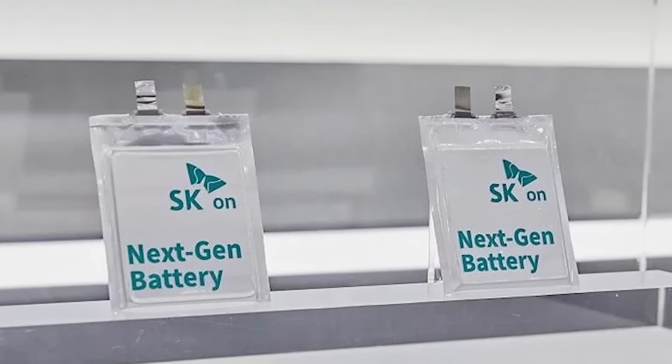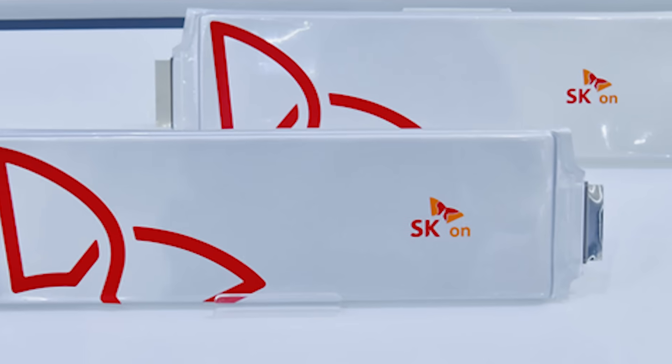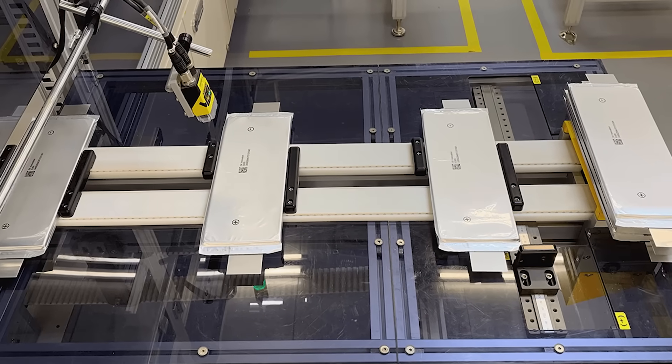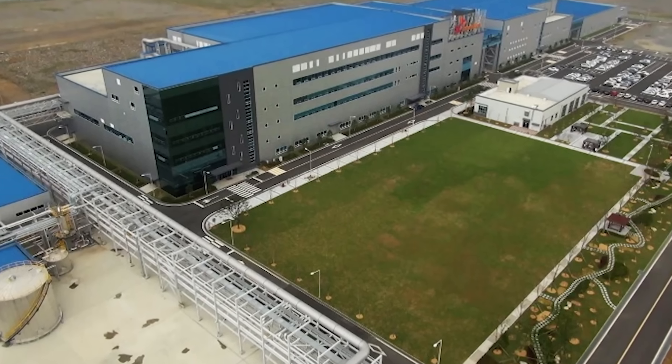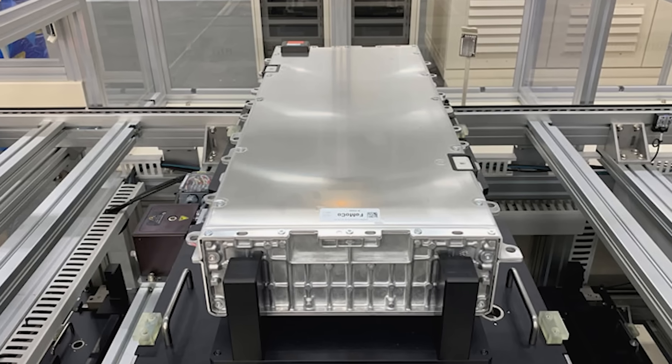South Korea's SK-On talks about warm isostatic pressing to cut porosity and raise density, with figures near 800 watt-hours per litre. Scaling and automation have been tough, but a pilot facility in Daejeon opened in September, and the target date moved up to 2029.